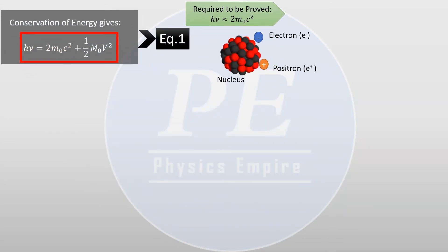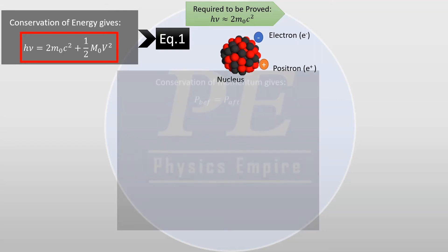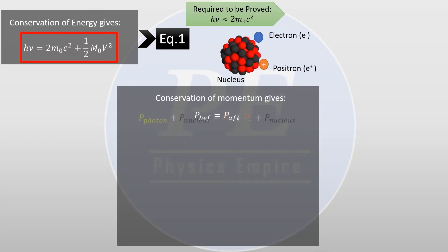In order to show that the energy of the photon is twice the rest energy of the electron, we shall show by some means that the kinetic energy of the nucleus after the collision should be negligible. To do so, we proceed by the law of conservation of momentum as follows.